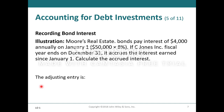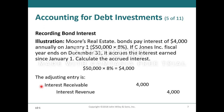So illustration: Moore's Real Estate bonds pay interest of $4,000 annually on January 1st. If C Jones Incorporated's fiscal year ends on December 31st, it accrues the interest earned since January 1st. The adjusting entry is a debit to interest receivable for $4,000 and a credit to interest revenue for $4,000, recognizing the revenue and recording the receivable on C Jones's books.